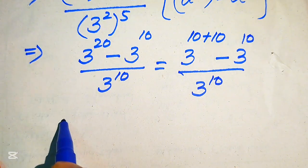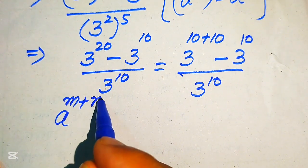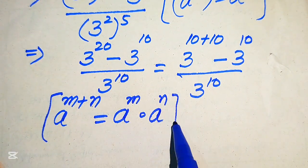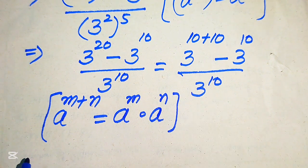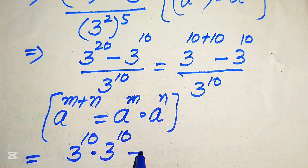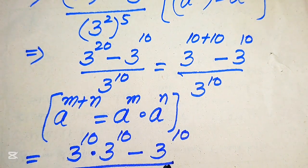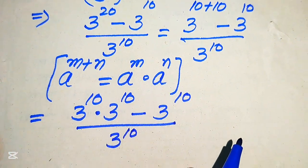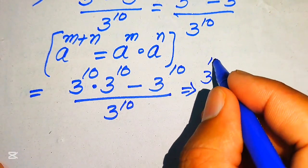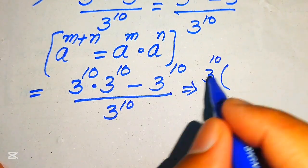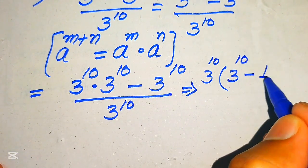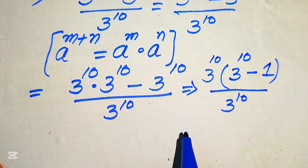We apply the exponent law: a to the power of m plus n equals a to the power of m multiplied by a to the power of n. According to this law, we break the term: 3 to the power of 10 multiplied by 3 to the power of 10, minus 3 to the power of 10, all divided by 3 to the power of 10. Focusing on the numerator, we factor out 3 to the power of 10, giving 3 to the power of 10 times (3 to the power of 10 minus 1), divided by 3 to the power of 10.